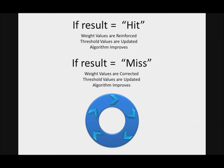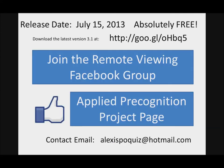So whether or not it's a hit or a miss doesn't really matter because if it's a hit, the weight values are reinforced. But if it's a miss, the weight values are corrected and the threshold values are updated, the algorithm improves. So if you want to join the remote viewing Facebook group, we need more likes in the Applied Precognition project page.